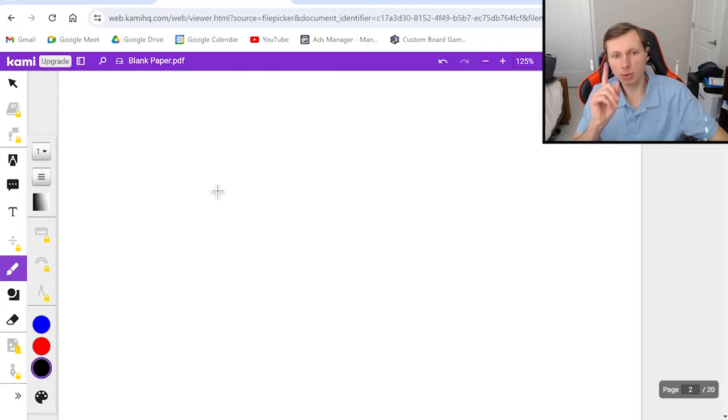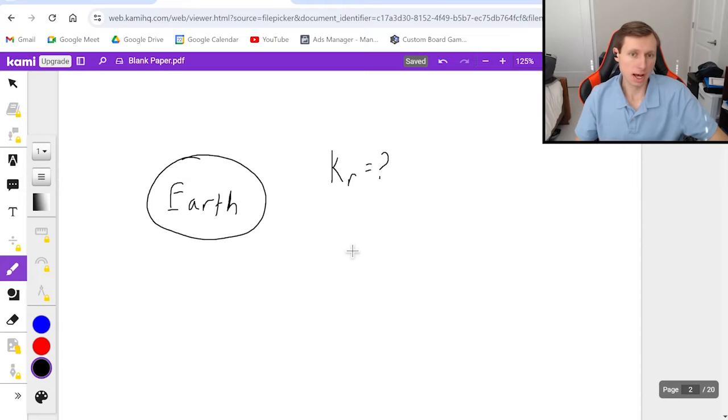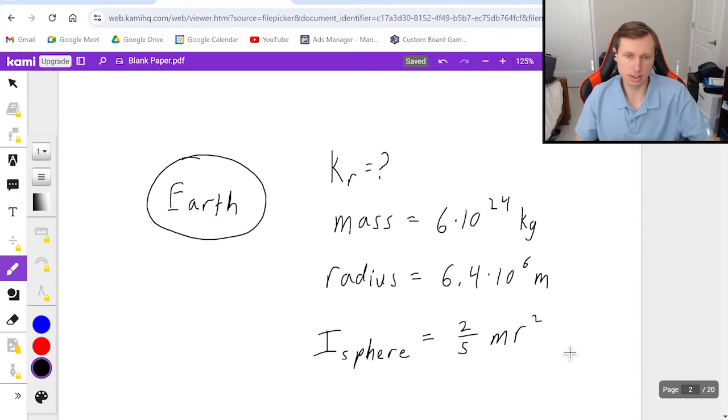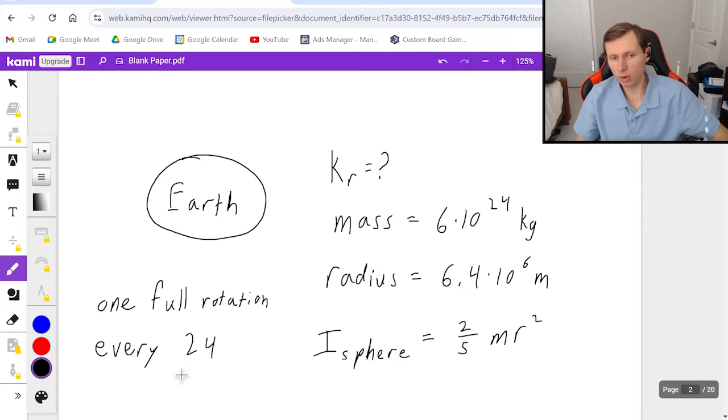But first, I have a fun one. I want you to calculate the rotational kinetic energy of the Earth. I'm going to help you out. First, I'm going to give you the mass of the Earth, that's 6 times 10 to the 24 kilograms. I'll give you the radius of the Earth, which is 6.4 times 10 to the 6 meters. We consider the Earth to be a perfect sphere, even though technically it's not. It's close enough to this equation. And the moment of inertia for a sphere is two-fifths m r squared, which we can get from a table if you're given one. One last thing I'm going to tell you as a hint: the Earth makes one full rotation every 24 hours. And this is everything you need to solve for Kr.